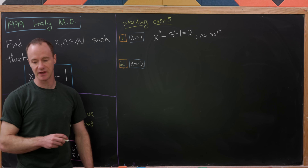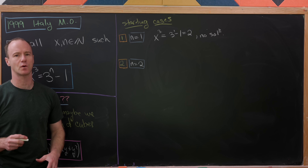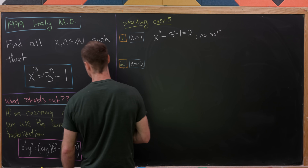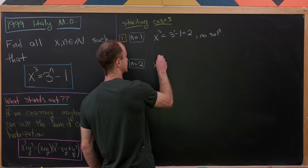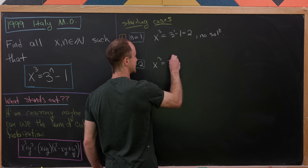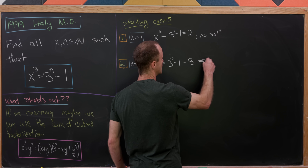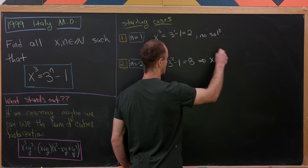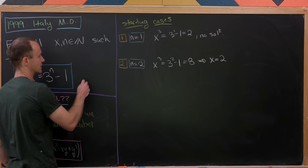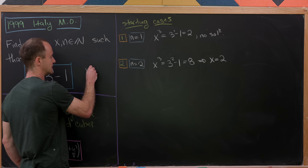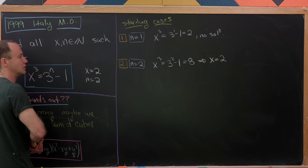What about n = 2? The n = 2 case was probably the fuel for this question in the first place, because it has a very clear solution. We get x³ = 3² - 1 = 9 - 1 = 8, which tells us that x = 2. So we already have the solution x = 2, n = 2.